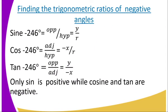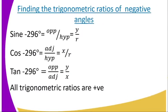For negative 246 degrees: sine is y divided by r, cosine is negative x divided by r, and tan is y divided by negative x. In this case, only sine is positive while cosine and tan are negative — the second quadrant properties. Then for the first quadrant, you can see all of them are positive, and all the trigonometric ratios are positive.